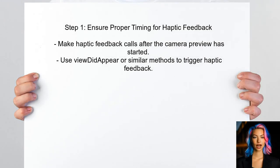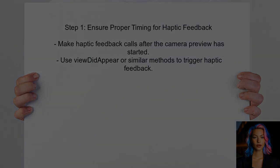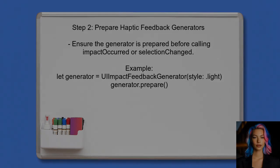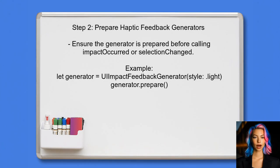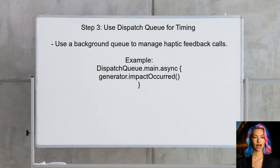To address the issue with haptic feedback in AV Foundation, first ensure that the haptic feedback calls are made at the right time in the app's lifecycle. Next, check if the haptic feedback generators are being prepared correctly — this is crucial for ensuring that the feedback is delivered smoothly.